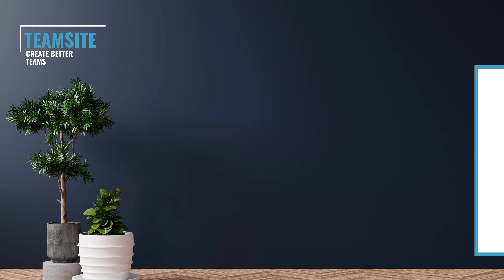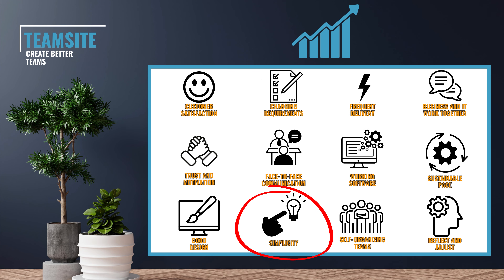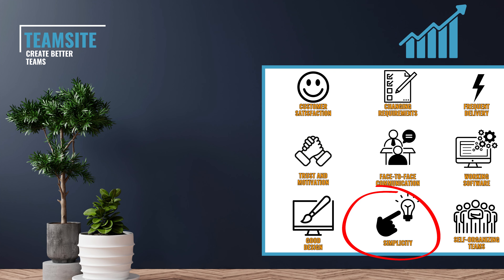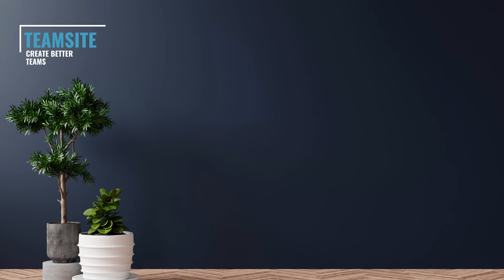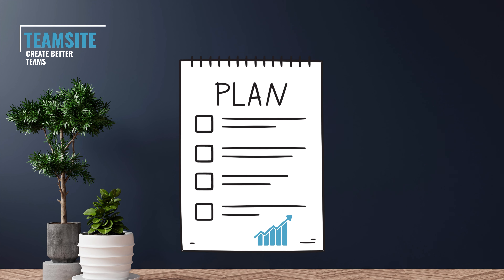To conclude the exercise, decide on what area you would like to improve and brainstorm a couple of suggestions. As always, it is important to leave the session with a plan for improvement, otherwise you will just be stuck with a number and a confusing web of agile questions.